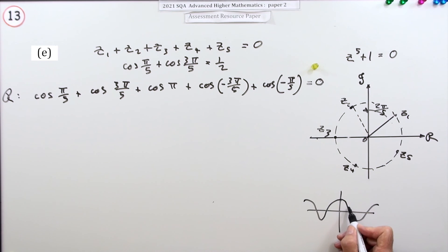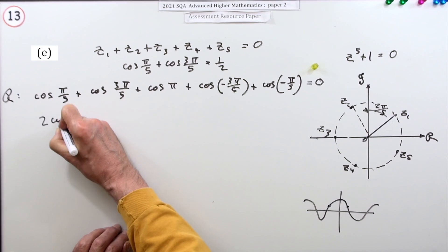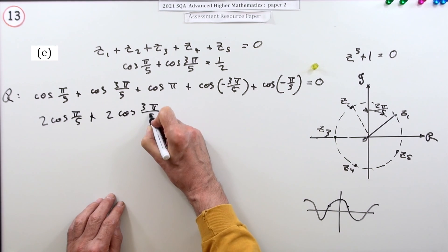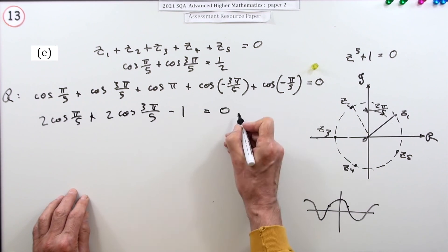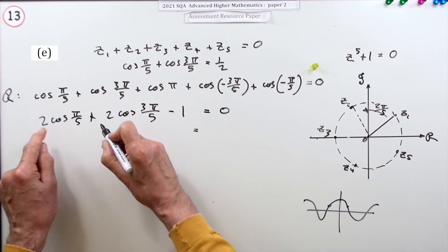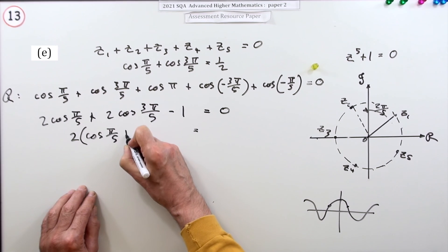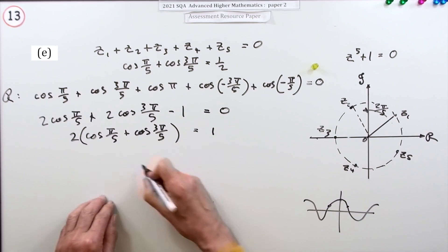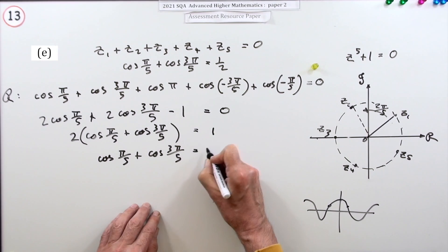Since cosine is an even function, cos(−θ) = cos(θ), so cos(π/5) = cos(−π/5) and cos(3π/5) = cos(−3π/5). This gives two lots of cos(π/5) plus two lots of cos(3π/5) plus (−1) = 0. Taking −1 across and factoring out 2: cos(π/5) + cos(3π/5) = 1/2.